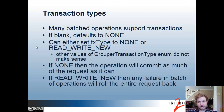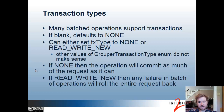Many batched operations support transactions, so you need to pass in the transaction type for that batch of operations. If you don't pass in a transaction type, it defaults to none, meaning as much of the batch will succeed as it can. You can set the TX type parameter to none or read-write new. If none, the operation will try to do as many sub-requests as it can and commit as much as it can. If it's read-write new, any failure in the batch will roll the entire request back.